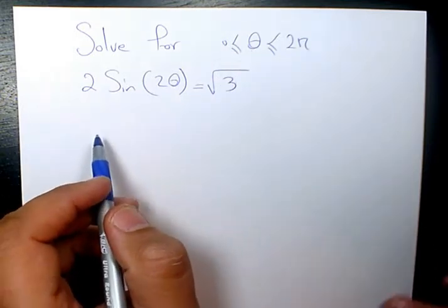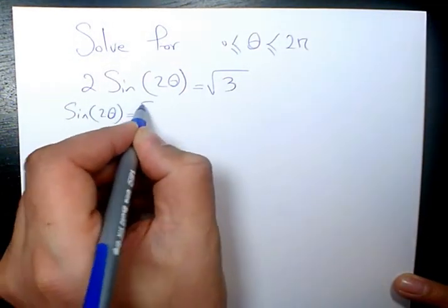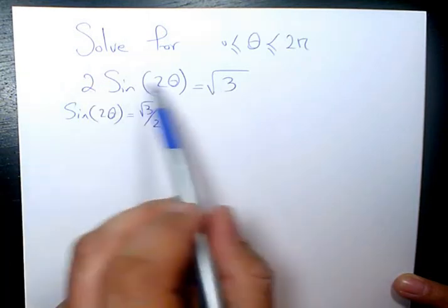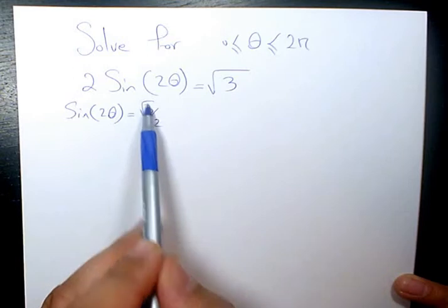So first thing I want to do, I want to have sine 2 theta equals to root 3 divided by 2. Basically, I divided both sides by 2.